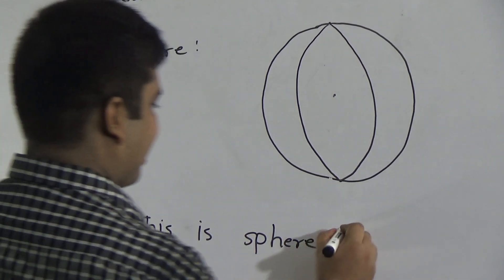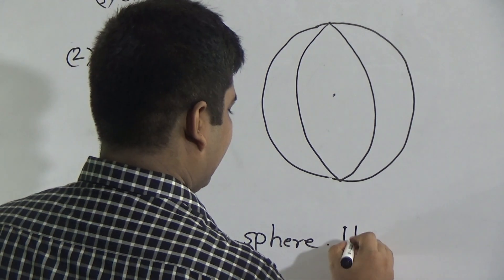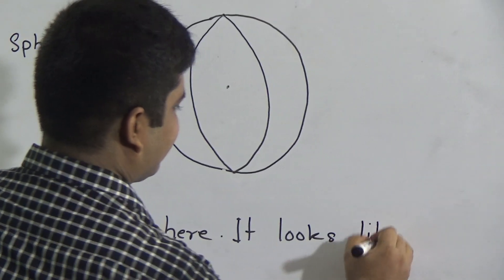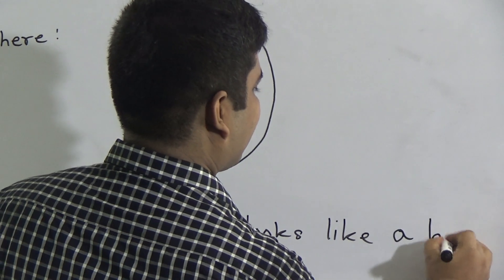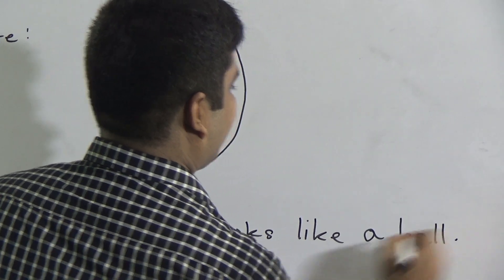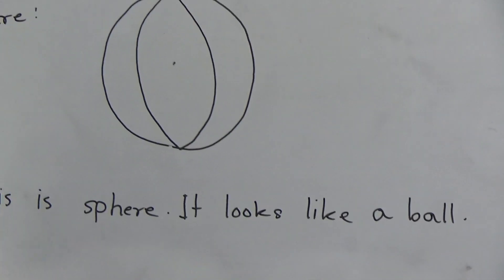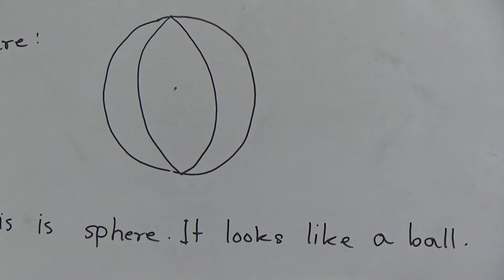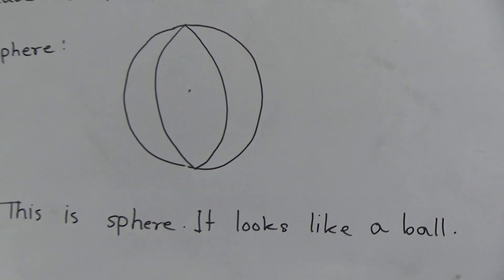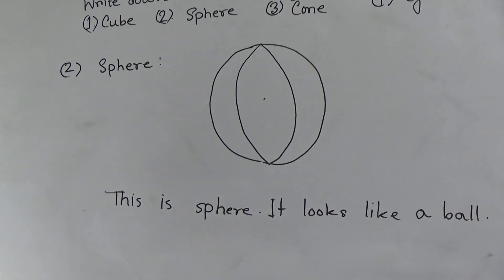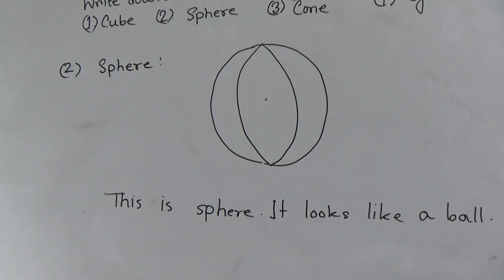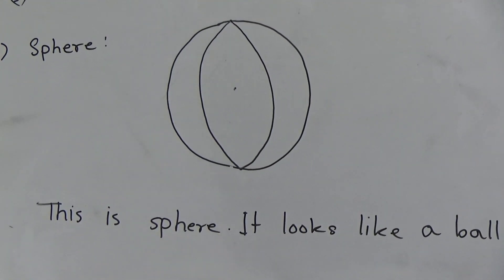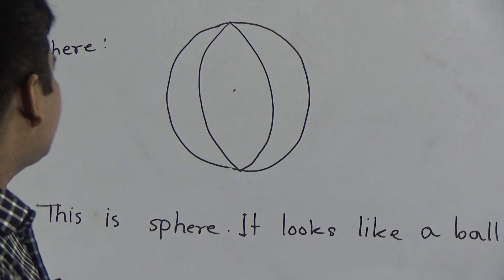So my dear students, this is called a sphere and it looks like a ball. So now write the short note: this is sphere and it looks like a ball. I know you are very smart learners and you can easily understand how to draw a sphere. So shape two is done.